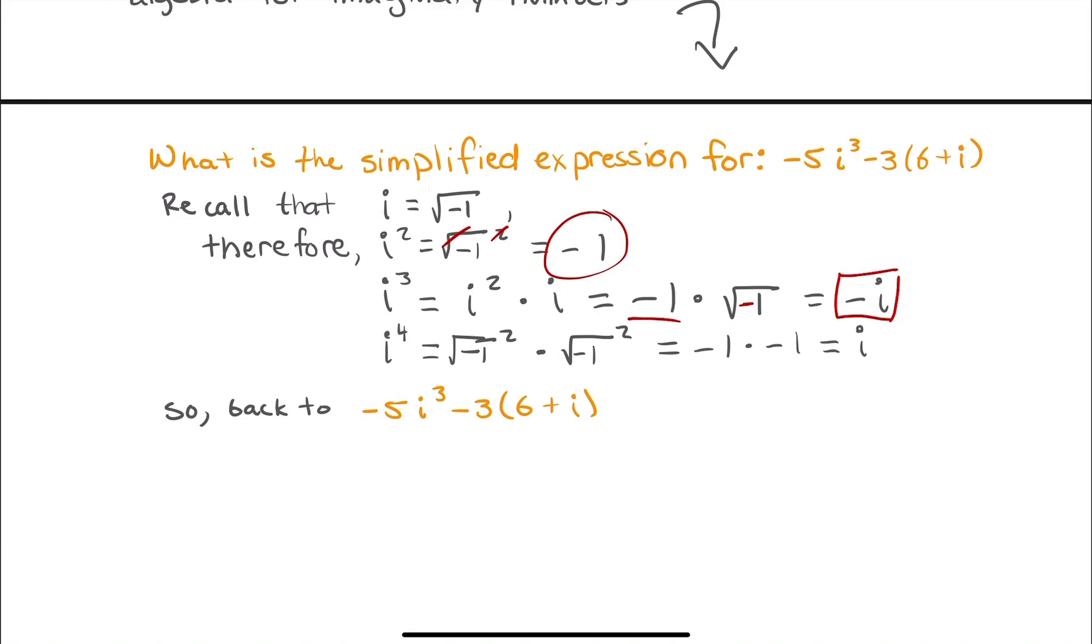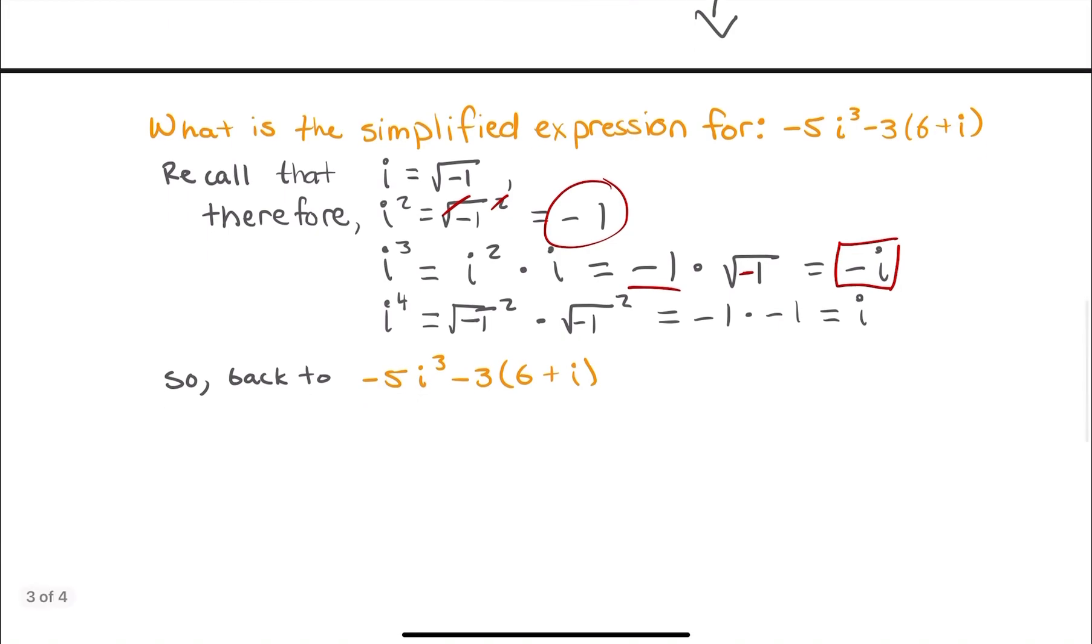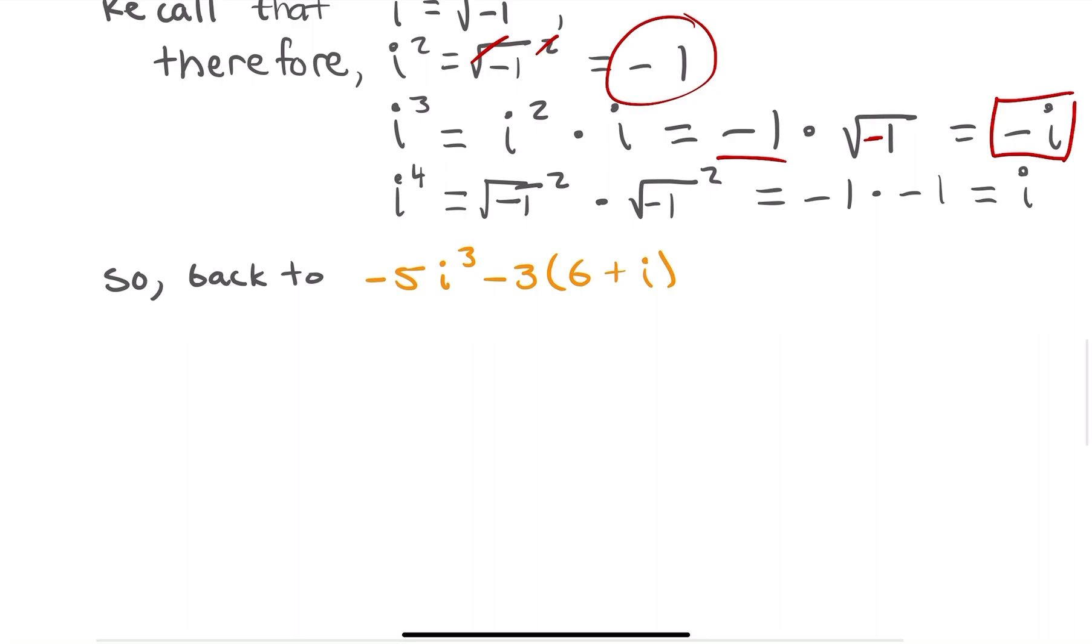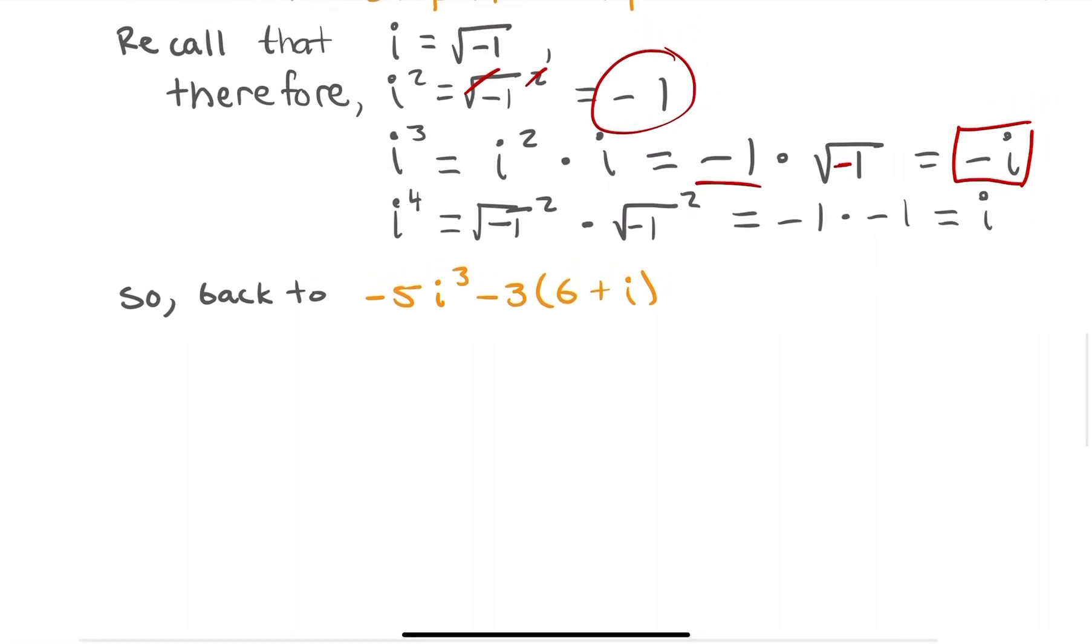So back to the question at hand. Let's see. I'll use my red pen to solve this. Negative 5i cubed minus 3 times the quantity 6 plus i. So we defined up here that i cubed is actually just equal to negative i. So this part right here, I can just rewrite as negative 5 times negative i. And all that's going to come out to be is positive 5i.